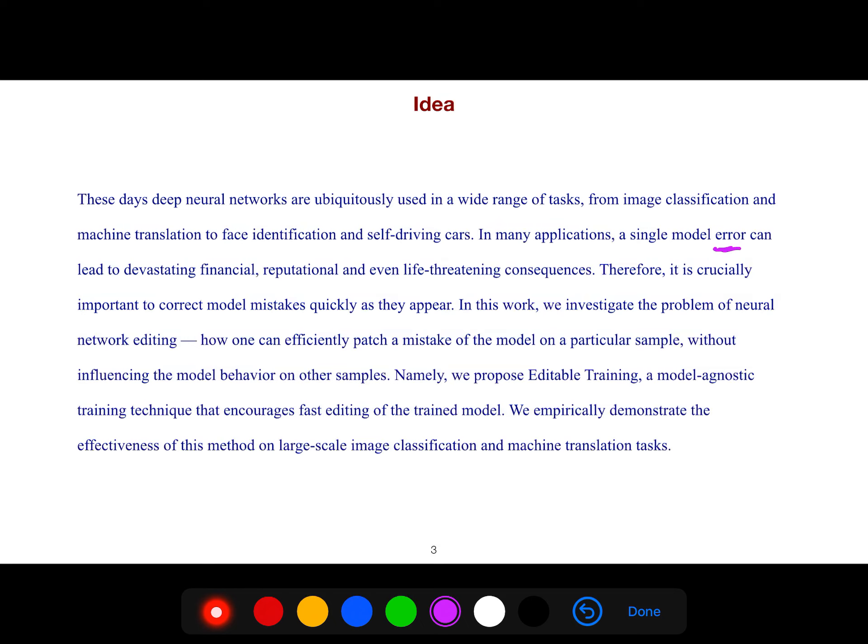In this work, we investigate the problem of neural network editing, how one can efficiently patch a mistake of a model on a particular sample without influencing the model behavior on other samples. Namely, we propose Editable Training, a model agnostic training technique that encourages fast editing of the trained model. We empirically demonstrate the effectiveness of this method on large-scale image classification and machine translation tasks.